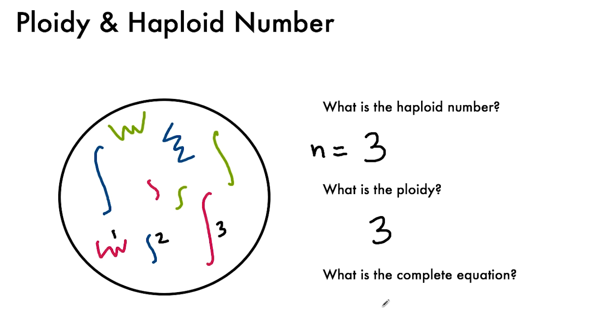And now the complete equation, if you'll recall, is you multiply three by n, and you multiply this side by three. So you should get 3n equals nine.